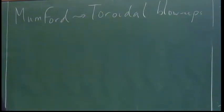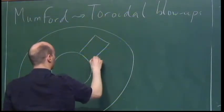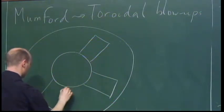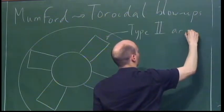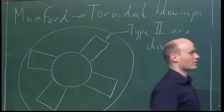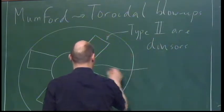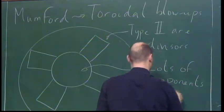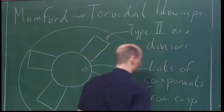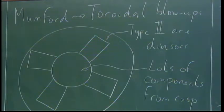People knew this was too small for a long time, so Mumford came along with the toroidal blow-ups. Now the type II components become divisors — 18-dimensional rather than 1-dimensional. And then you get lots of components coming out of the cusp. The blow-up of the cusp is not unique; there's a choice to be made.